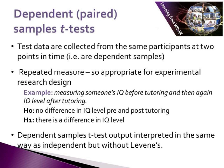The dependent sample t-test is also known as repeated measures, so it is also appropriate for research data from experimental designs. If we take an example of measuring IQ before tutoring and then measuring IQ after tutoring, our null hypothesis is that there is no difference in IQ level pre and post tutoring, and our alternative is that there is a difference. A dependent sample t-test is interpreted in exactly the same way as the independent t-test, but we don't use Levene's test.